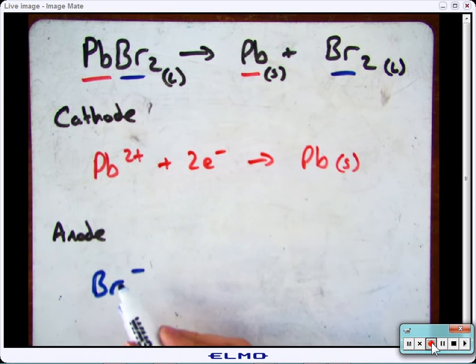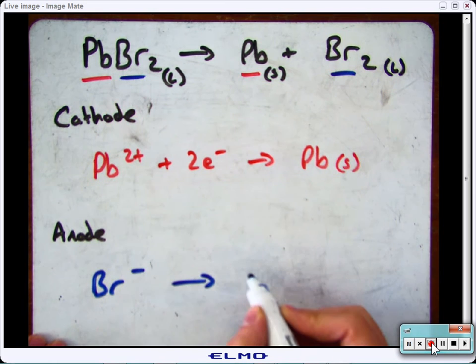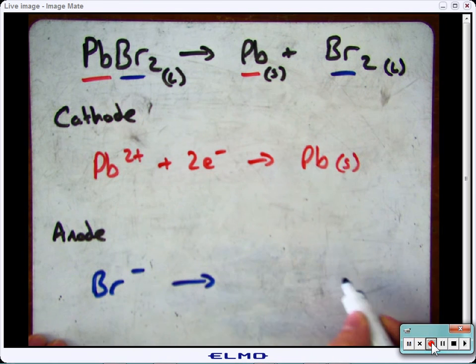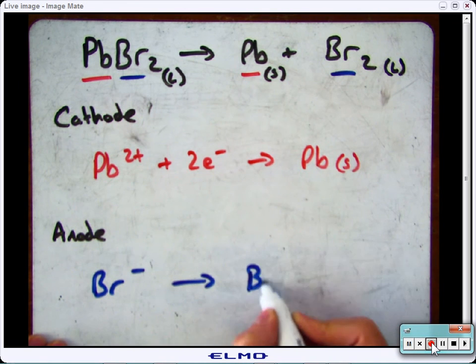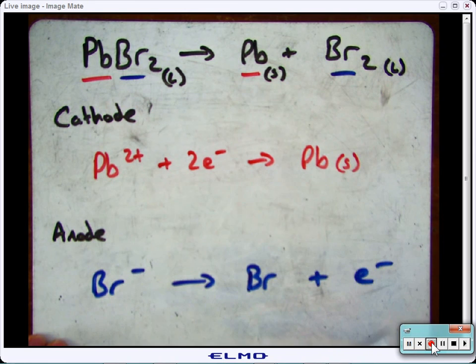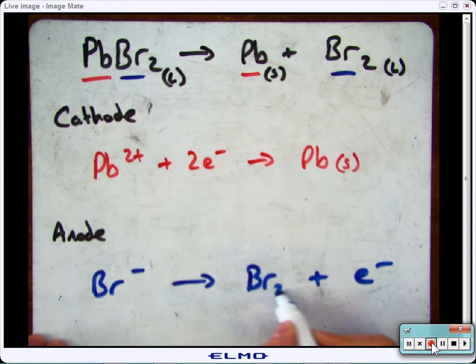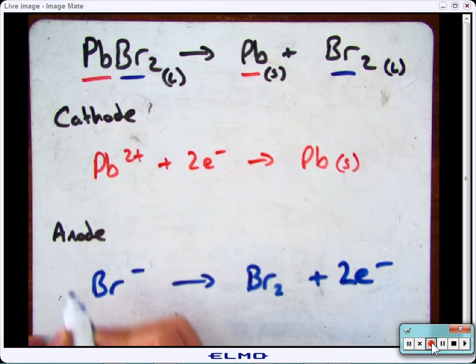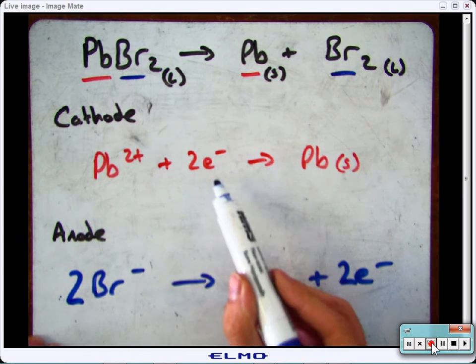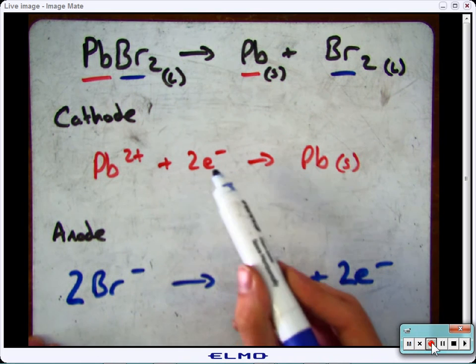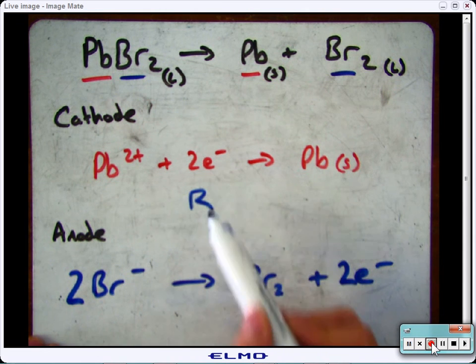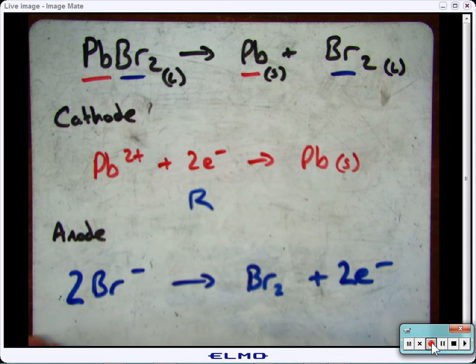At the anode, because this has got one extra electron that it needs, you need to take it away. So, you'll have one left on this side. But because bromine goes around in pairs, you'll need two electrons there, and two there, to balance it. So, this one has gained electrons, reduction, and this one has lost electrons, which is oxidation.